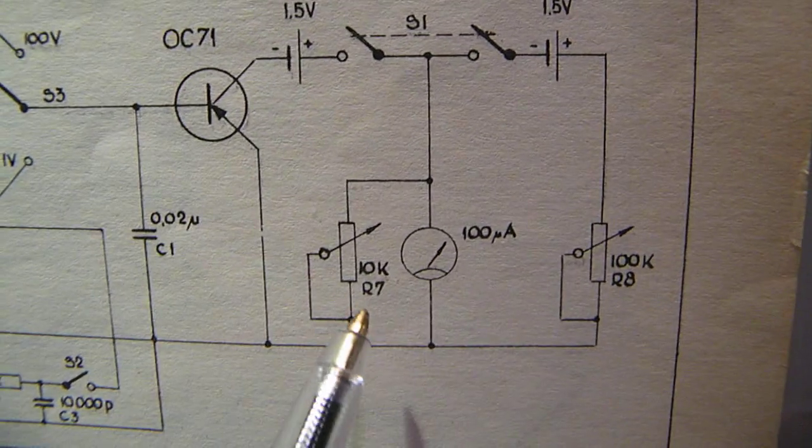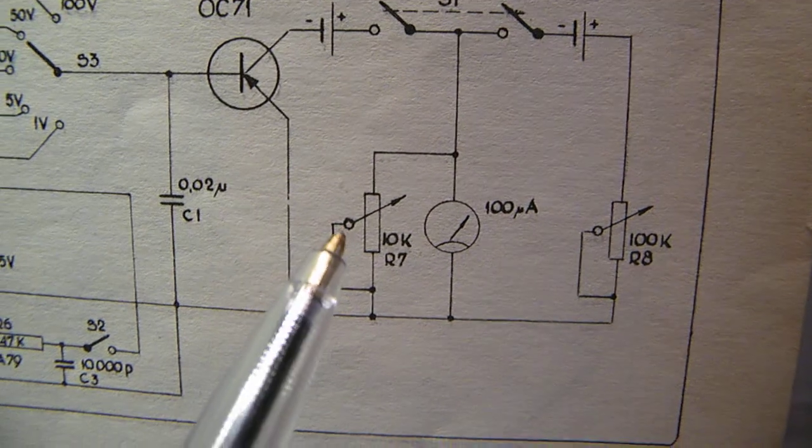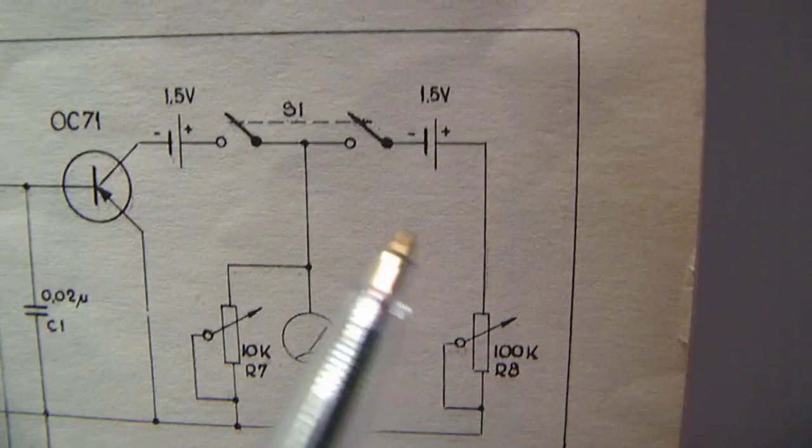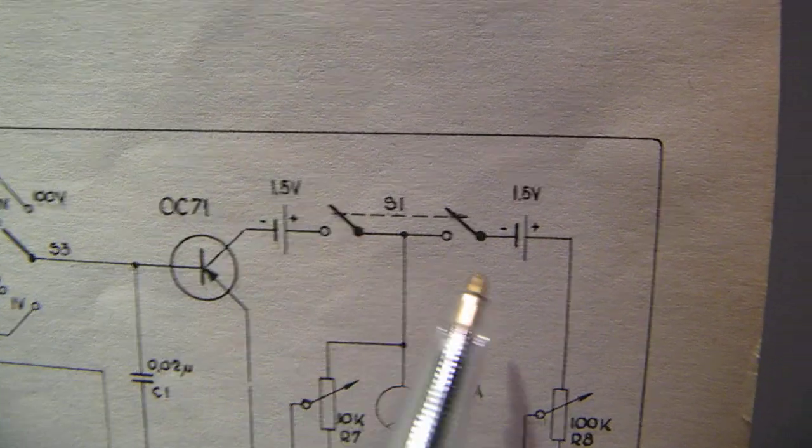The resistor here bridges that micron parameter so that you can set it to its sensitivity. Here is a 100k resistor and it switched here with the help of two 1.5 volt batteries.